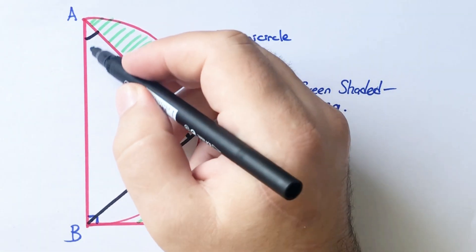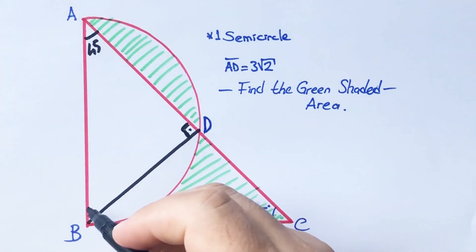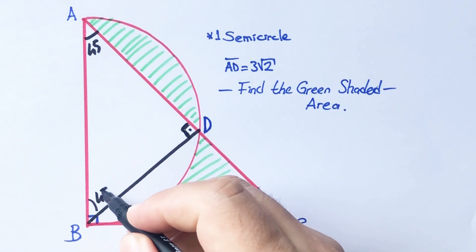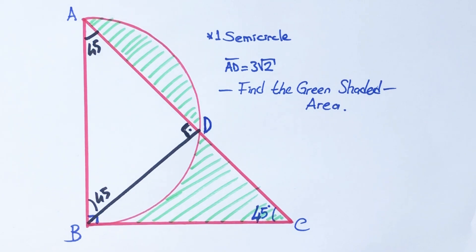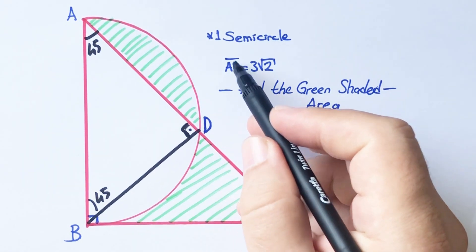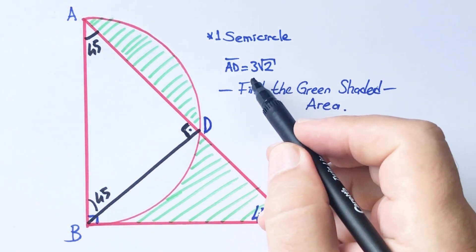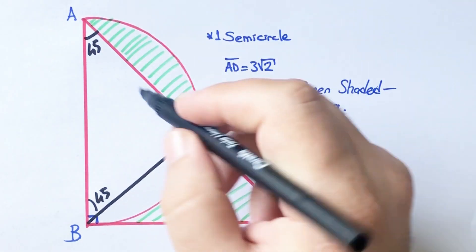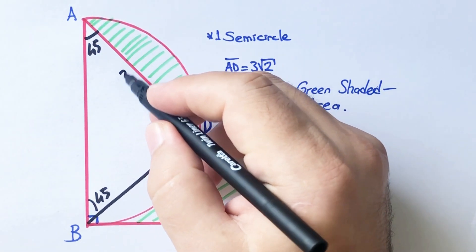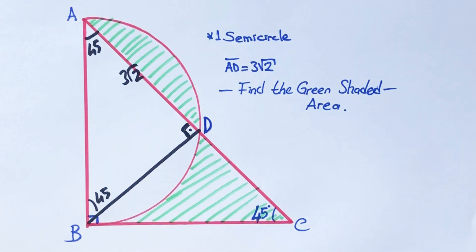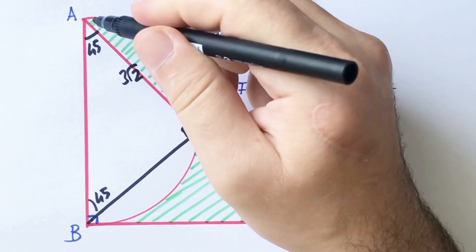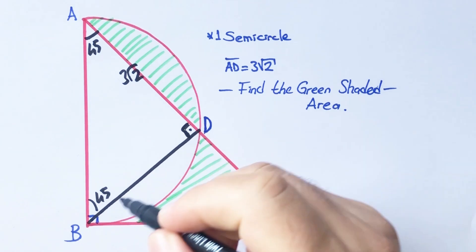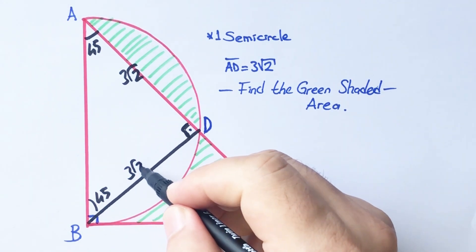If here is 45 degrees, this angle must be 45 degrees, and here is also 45 degrees because of the isosceles angle. It is given 3√2. We know that in an isosceles right triangle, these two sides must be equal.